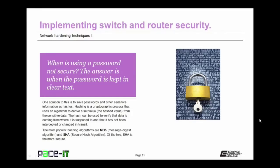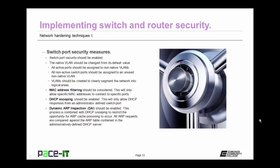The wise network administrator makes sure that all passwords and usernames are kept as hashed values. Under implementing switch security measures, switch port security measures are vital. Switch port security should be enabled. All enterprise switches are capable of having security measures enabled at the port level, and that should happen. Also, the native VLAN should be changed from its default value. All active ports should be assigned to non-native VLANs. All non-active switch ports should be assigned to an unused non-native VLAN. VLANs should be created to clearly segment the network into logical, secure areas.